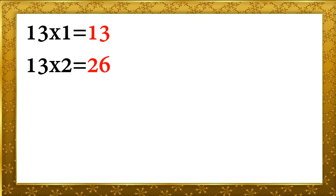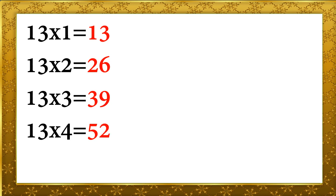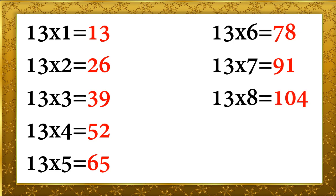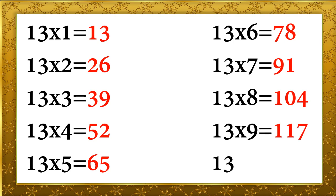13 ones are 13, 13 twos are 26, 13 threes are 39, 13 fours are 52, 13 fives are 65, 13 sixes are 78, 13 sevens are 91, 13 eights are 104, 13 nines are 117, 13 tens are 130.